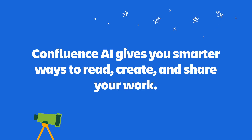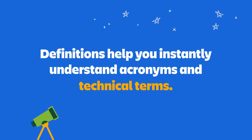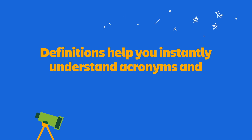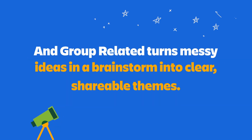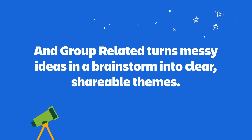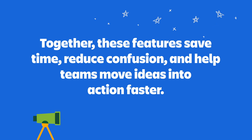To end things out, let's do a quick recap. Confluence AI gives you smarter ways to read, create, and share your work. Audio briefings lets you listen to condensed summaries so you can stay informed on the go. Definitions help you instantly understand acronyms and technical terms. Create with Robo makes it easy to start with strong drafts, and Group Related turns messy ideas in a brainstorm into clear, shareable themes. Together, these features save time, reduce confusion, and help teams move ideas into action faster.